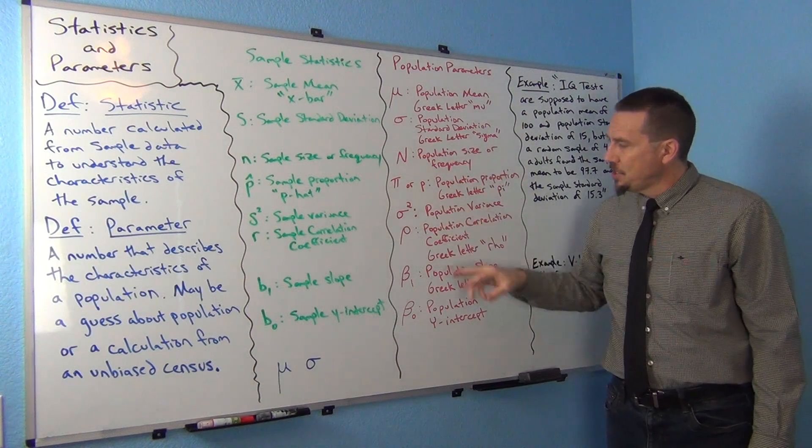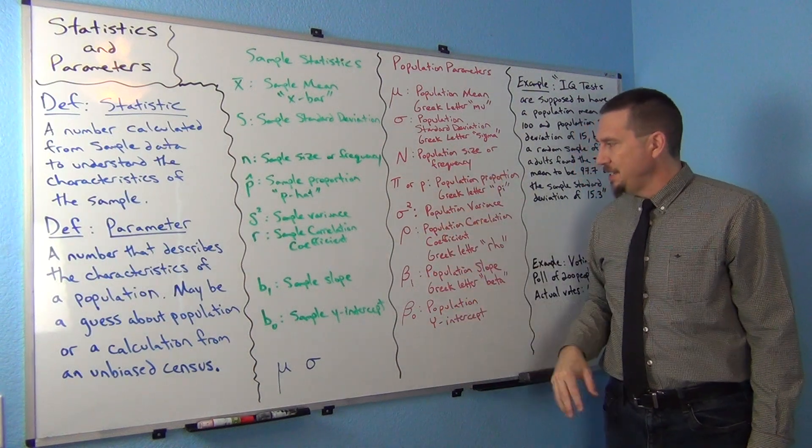Pi, capital N, sigma squared, rho, beta 1, beta 0, those are all parameters.